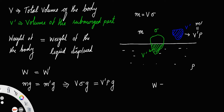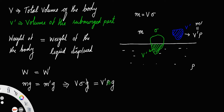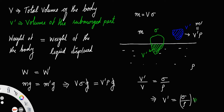Now you can cancel g from both sides. So V dash by V is equal to sigma by rho — the volume of the submerged part is equal to the density of the body divided by the density of the liquid, times the total volume of the body. This is the expression for the volume of the submerged part.